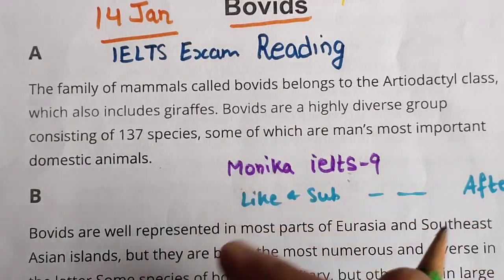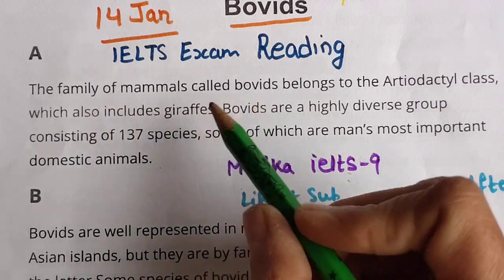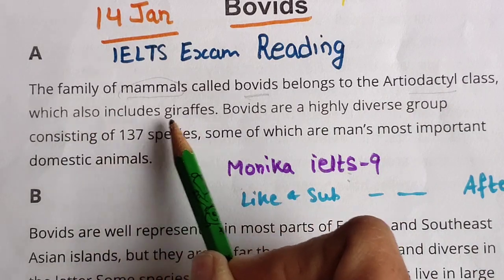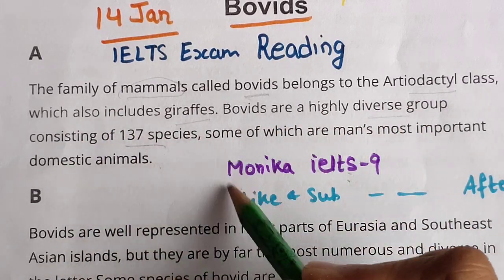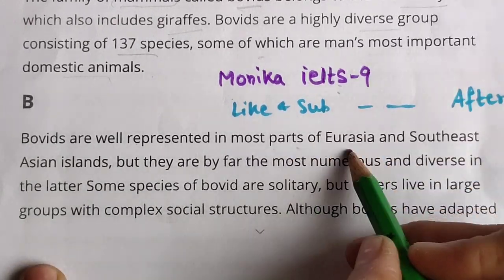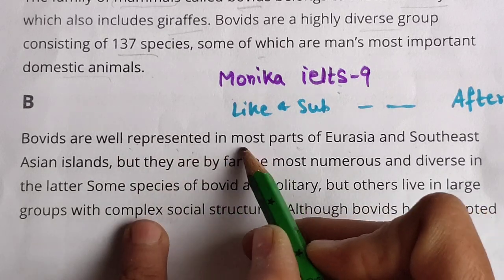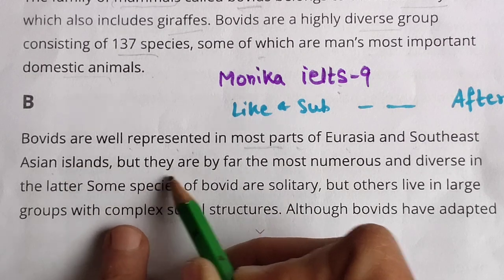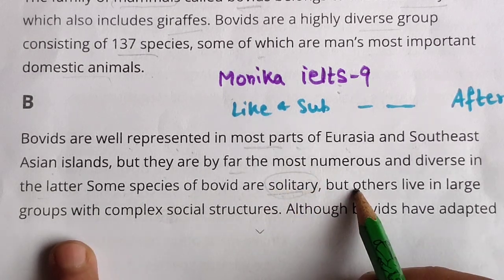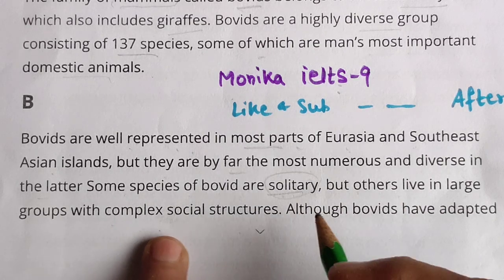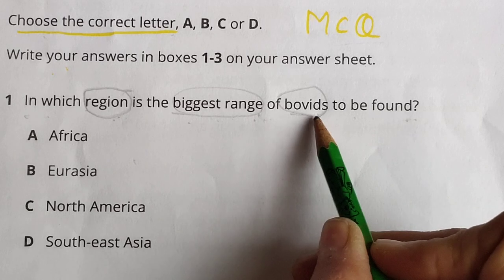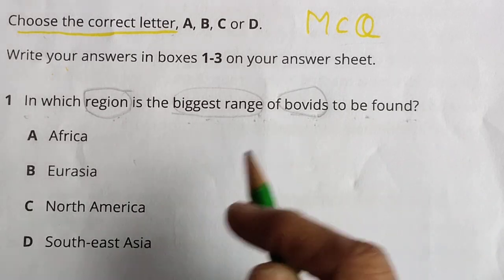I'll start reading from the first paragraph. The bovid family of mammals also includes giraffes. Bovids are a highly diverse group consisting of 137 species, of which many are the most important domestic animals. Bovids are well represented in most parts of Eurasia and Southeast Asian islands, but they are far the most numerous and diverse in the latter. Some species of bovid are solitary, but others live in large groups with complex social structures.